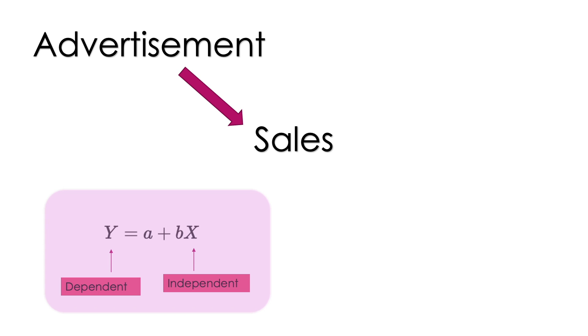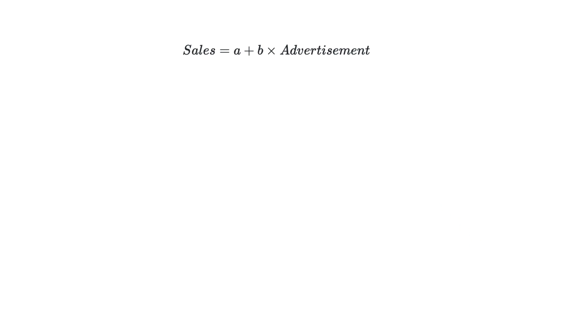Now this is the equation that has all the answers that we were looking for in the examples. If we write it in the form of our example we get this. So here sales is written as an equation of advertisement and it has a and b, two unknowns. So this linear regression algorithm actually estimates the values of a and b.